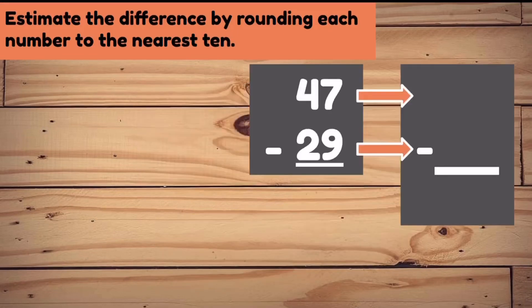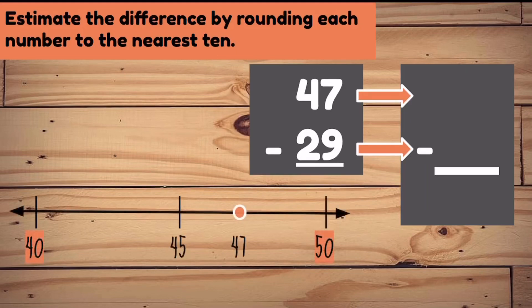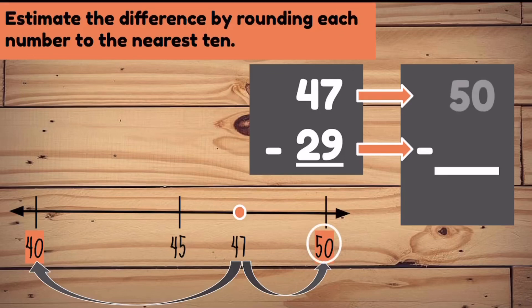47 take away 29. Let's round 47 to the nearest 10. We know that 47 is surrounded by 40 and 50. But is it closer to 40 or 50? It's way closer to 50, so we know that 47 rounds to 50.